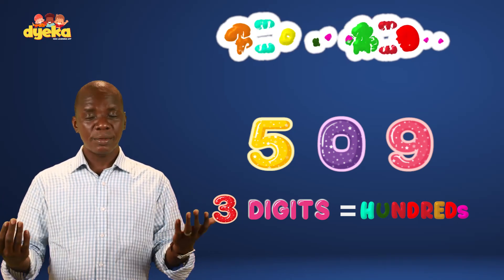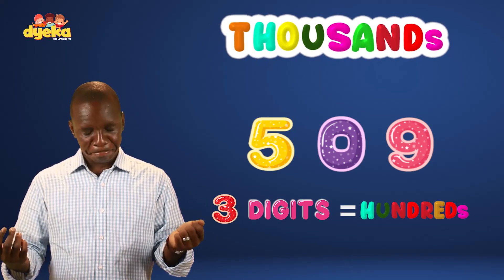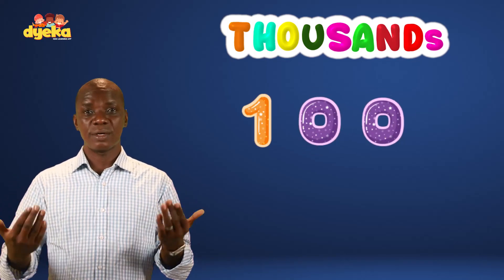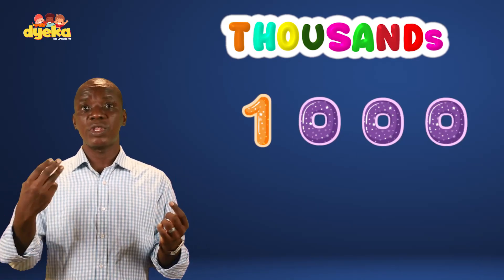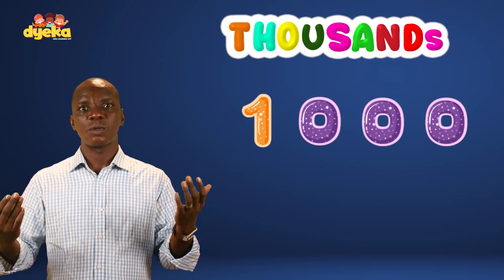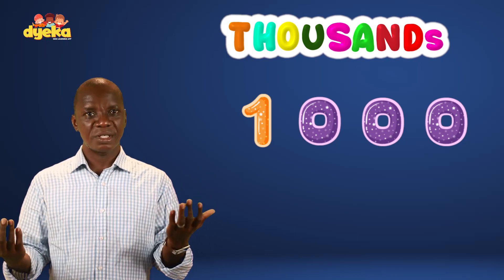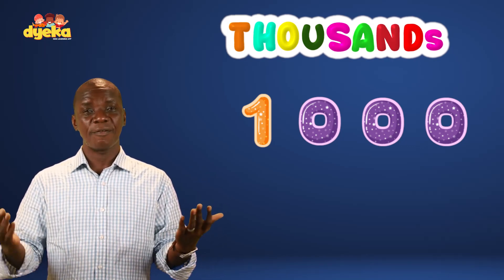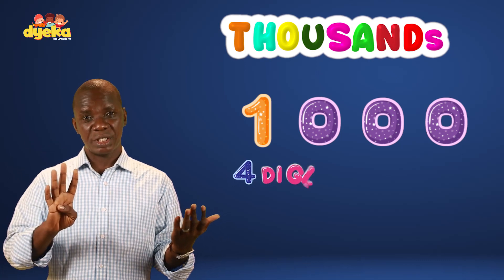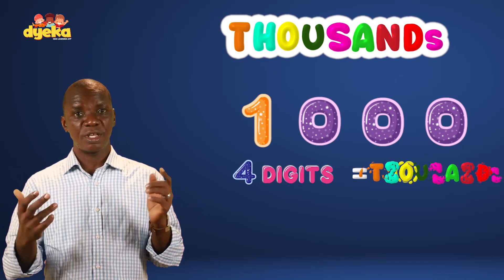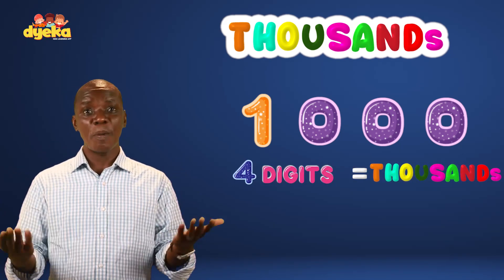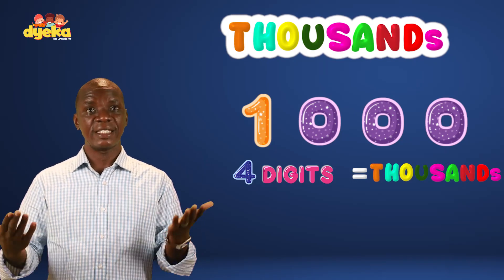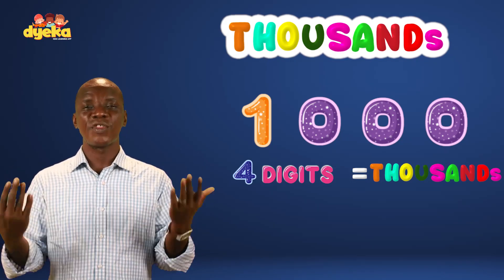Now let's look at the number in thousands. 1, 0, 0, 0 — 1 with three zeros. That is 1,000. That was pretty easy. How many digits do we have? 4 digits, 1 with 3 zeros. So when a number has 4 digits, it is in thousands.